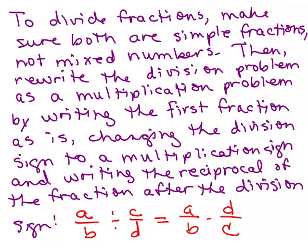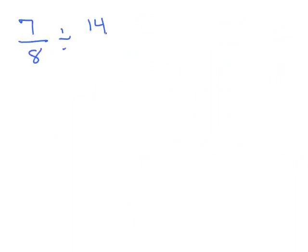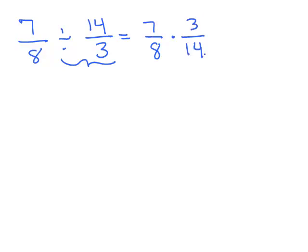Now let's look at a particular problem with numbers. How about 7 eighths divided by 14 thirds? We write the first number down, change the division to a multiplication, and multiply by the reciprocal of 14 thirds, which is 3 fourteenths. Then we can cancel: divide both 7 and 14 by 7, giving 1 and 2. So the answer is 1 times 3 in the numerator and 8 times 2 in the denominator, which is 3 sixteenths.